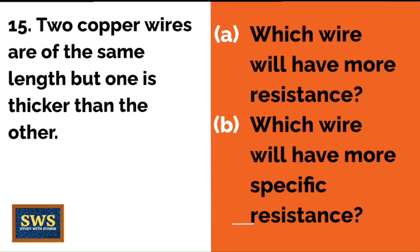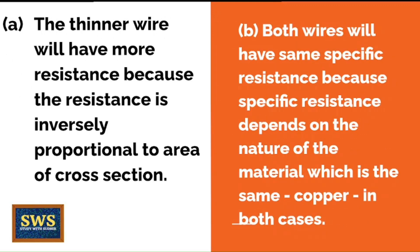Two copper wires are of the same length, but one is thicker than the other. Two questions: Which wire will have more resistance? The thinner wire will have more resistance because resistance is inversely proportional to the area of cross section. Which wire will have more specific resistance? Both wires will have the same specific resistance because specific resistance depends on the nature of the material, which is copper in both cases.